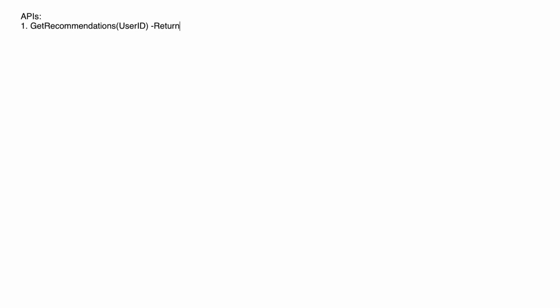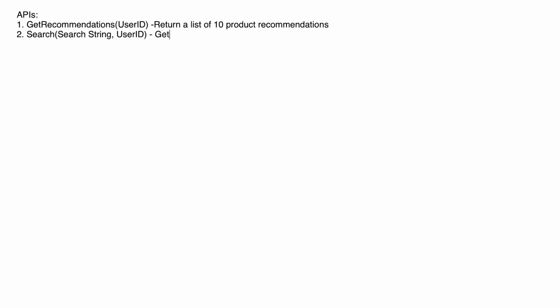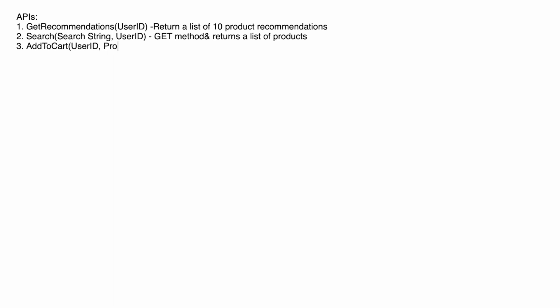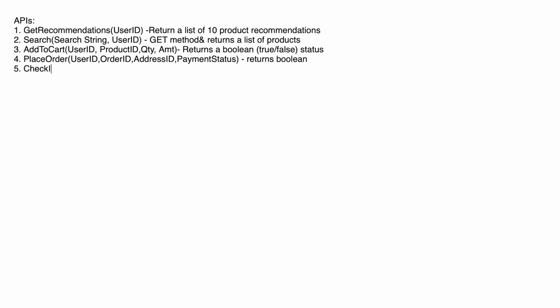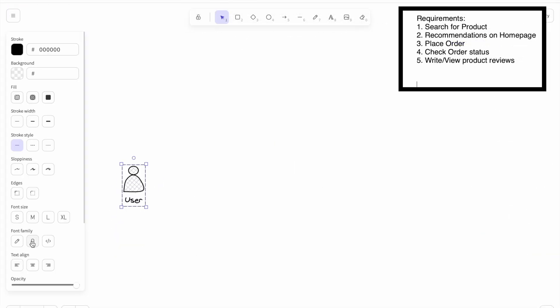For the APIs: the get-recommendation service takes a user ID and returns a list of 10 recommended products. The search service takes a search string and user ID, returning only products deliverable to the user's location. The add-to-cart service takes user ID, product ID, quantity, and amount, returning a boolean for success. The place-order service takes user ID, order ID, billing address, and payment information, returning true or false based on whether payment succeeded and inventory was available. The check-order-status service takes an order ID and returns the order's current status.